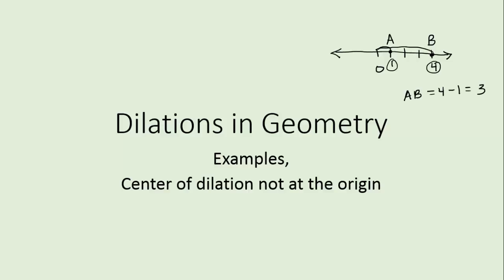The distance between A and B is the difference between the locations of A and B. So if A is at one and B is at four, it isn't one, it isn't four, it's three. The key difference is that we cannot use the coordinates as measurements, which means we can't just multiply coordinates to get new coordinates. That won't work when the center is not zero, zero.